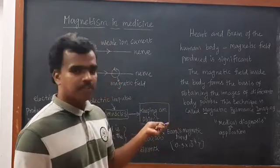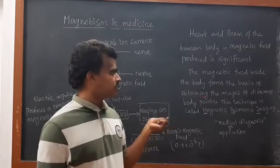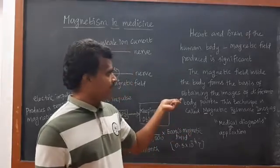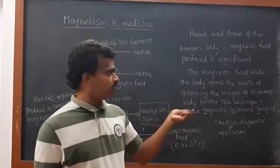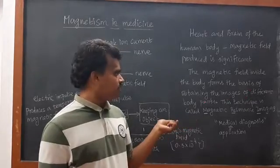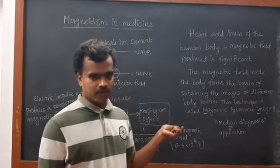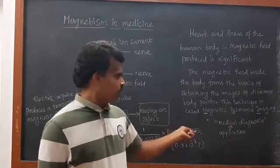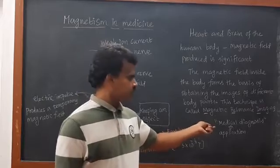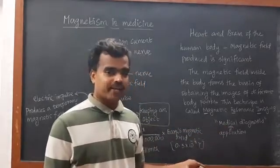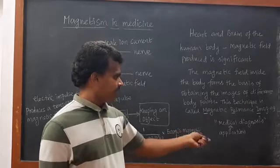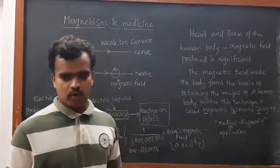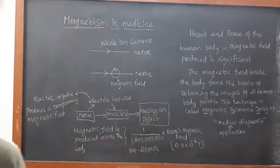The magnetic field inside the body forms the basis of updating the images of different body parts. When you go for a scan, the magnetic field inside the body forms the basis for imaging different body parts. This process is called Magnetic Resonance Imaging — MRI. That is why we call it an MRI scan. The main application of MRI is medical diagnosis.